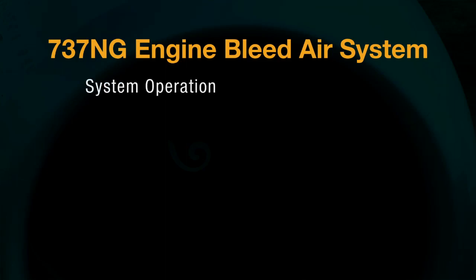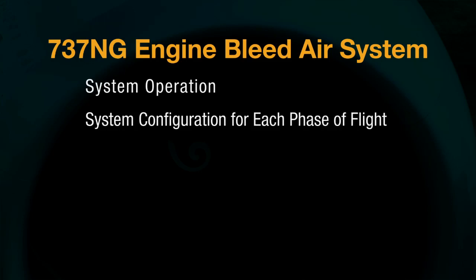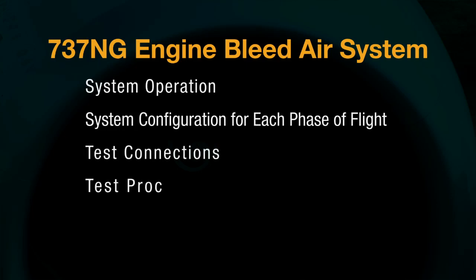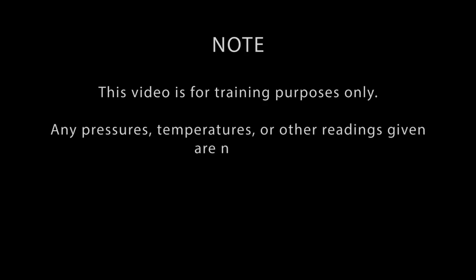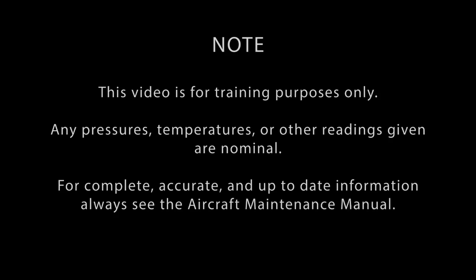This ends our program: 737 Next Generation Bleed Air System Overview and Troubleshooting. With the information presented in this video, you should have a basic understanding of how the 737NG Bleed Air System works. Since the log report will tell you when a problem occurred, knowing what the system should be doing during that particular phase of flight will help isolate the fault and give you a better idea of what tests need to be run. You should also know where and how to attach the test equipment, run some of the more common tests, and interpret the results of those tests. Keep in mind that this video is for training purposes only. Any pressures, temperatures, or other readings given are nominal and for the sake of illustration. For complete, accurate, and up-to-date information, always see the aircraft maintenance manual before beginning any maintenance tasks.